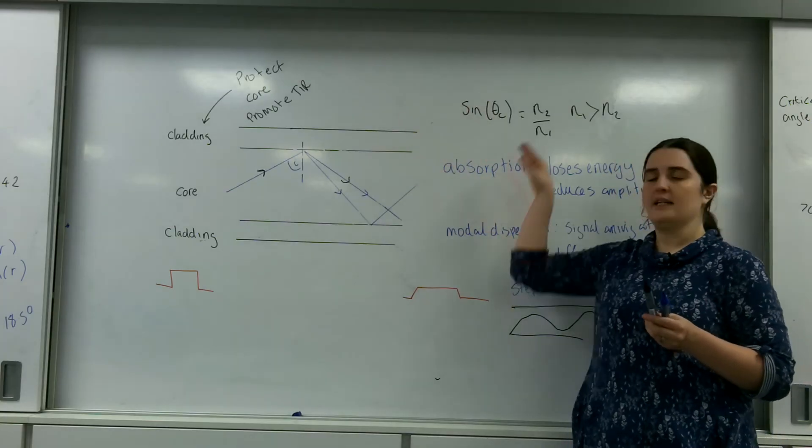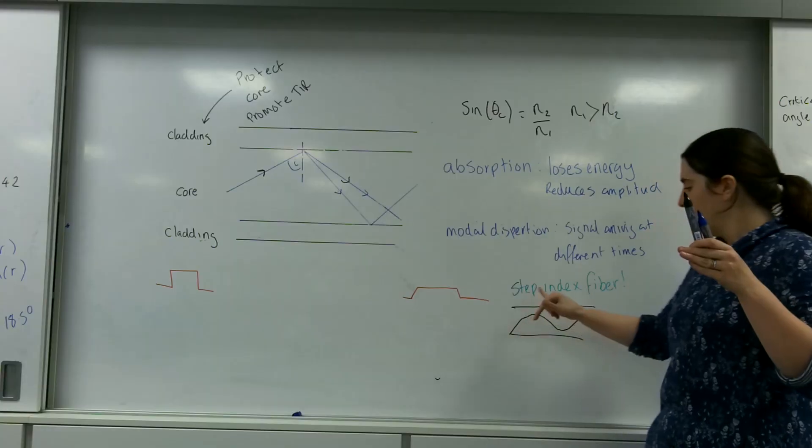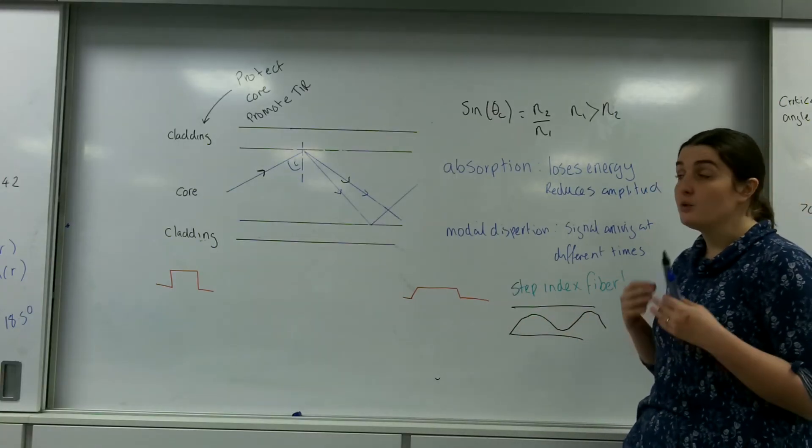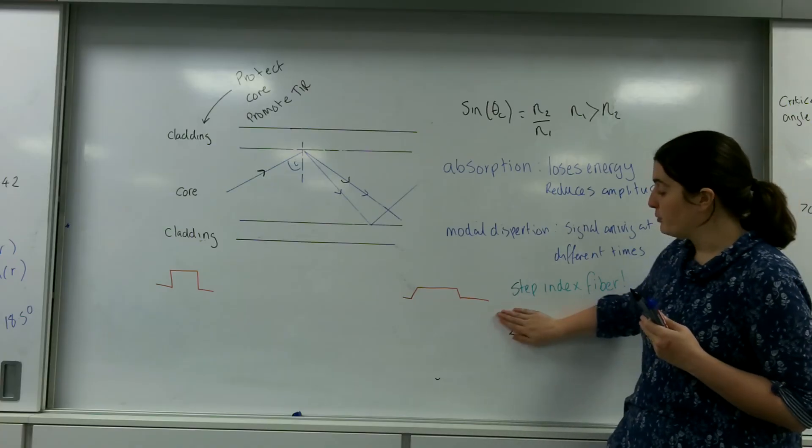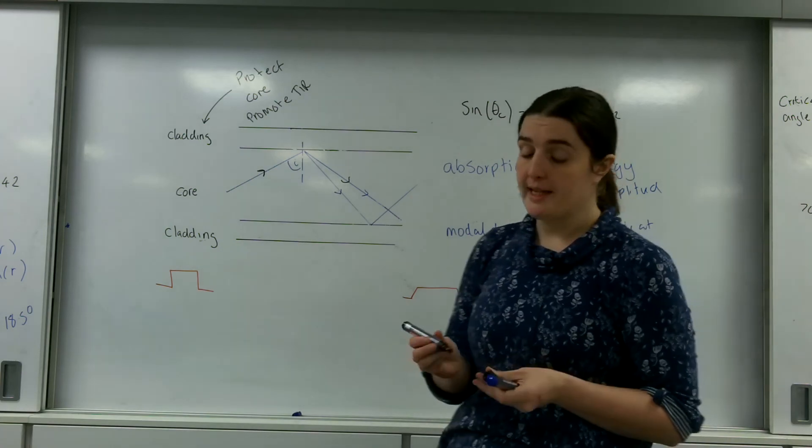But the whole intent is to keep it inside the thing and also to control the speed that the object is moving at, the light is moving. So your signal arrives much clearer at the end.